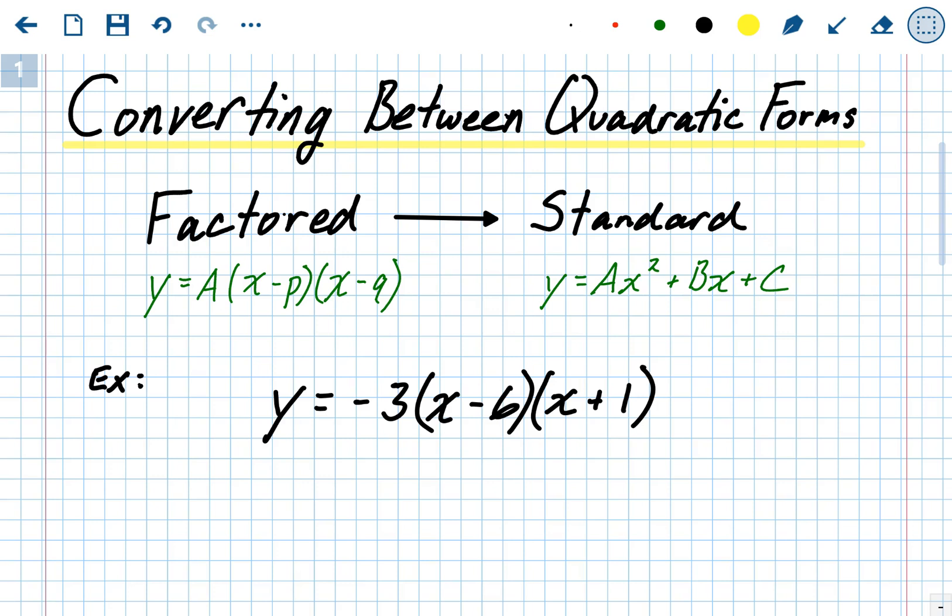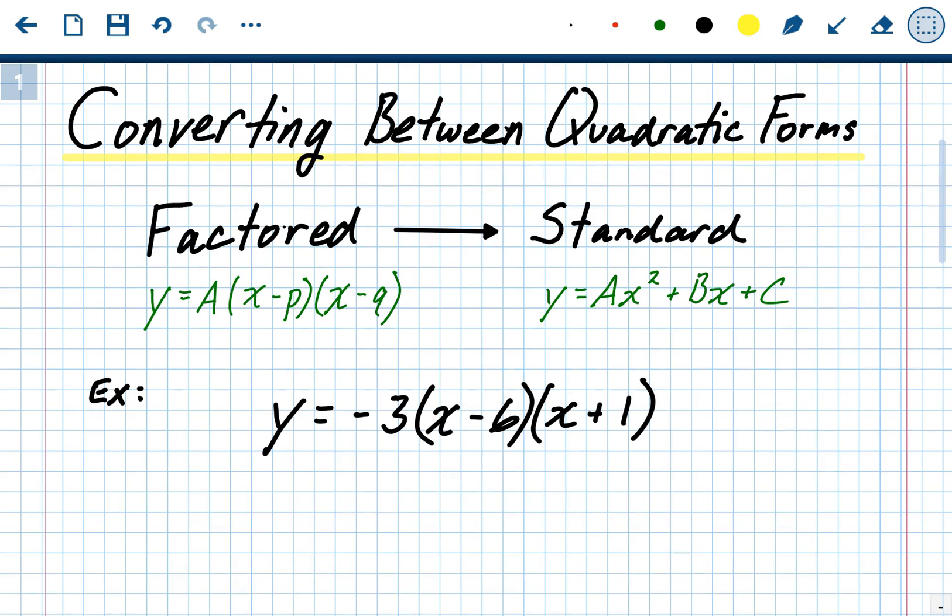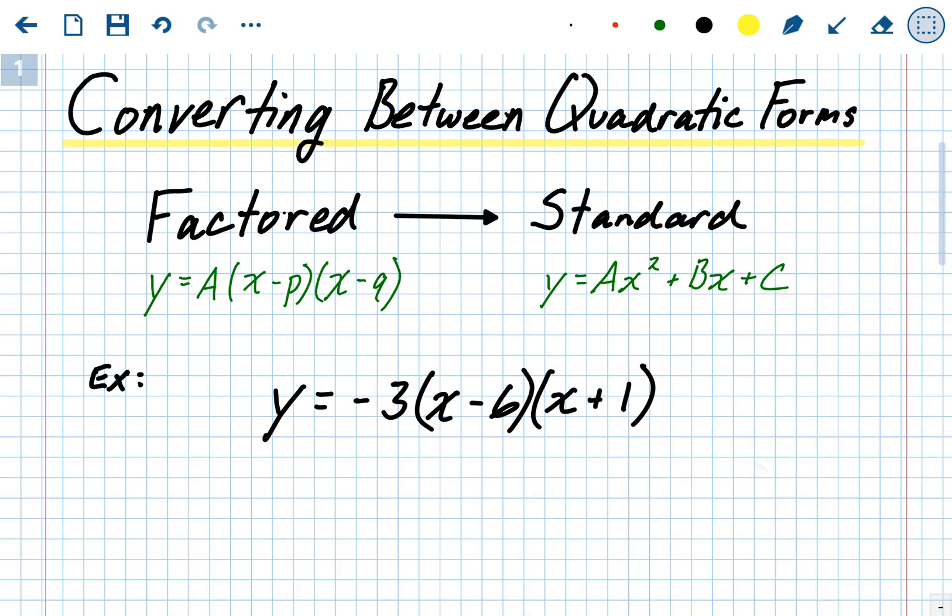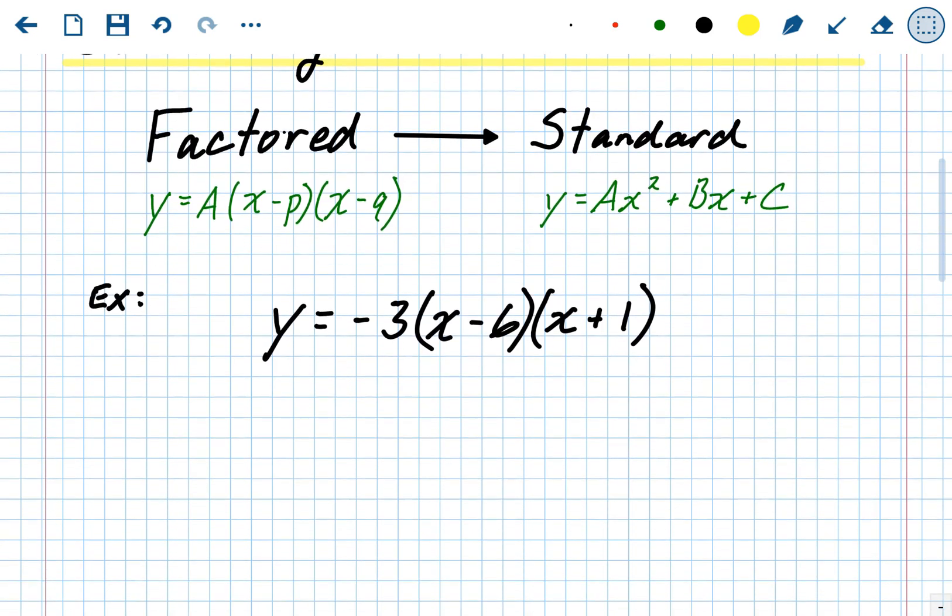So our A value in this example problem is negative 3 in factored form. So when we're in standard form, our A value, the number in front, should also be negative 3 again. All right, so let's run through these. If you're going from factored form into standard form, all it is is simplifying. All you have to do is, it's two quick steps. You're going to FOIL the two binomials and then distribute.